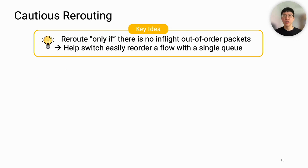Our key idea is to make rerouting only when there are no in-flight out-of-order packets. By doing that, it enables reordering one flow using only one queue, making reordering manageable.